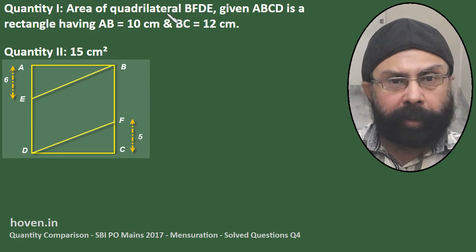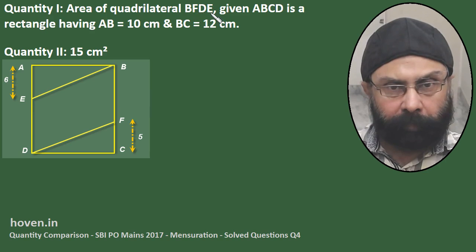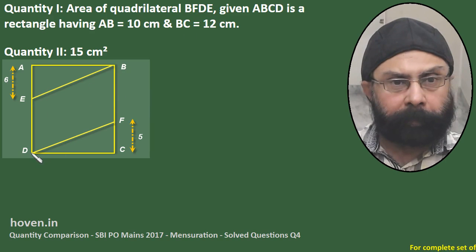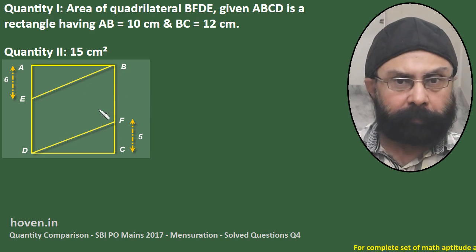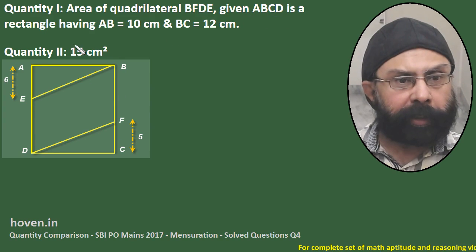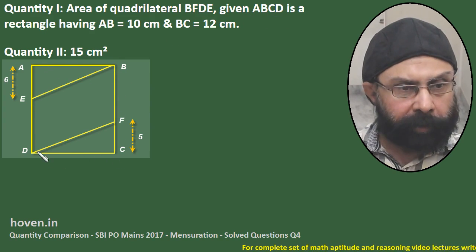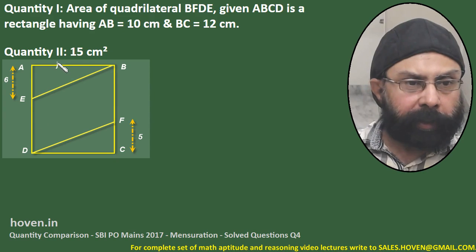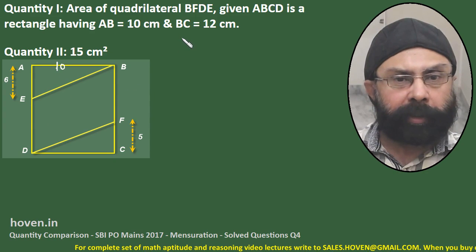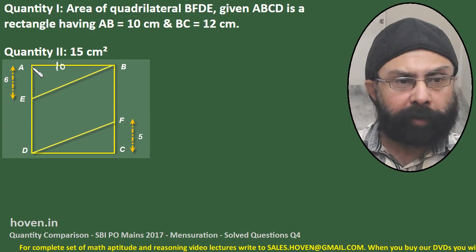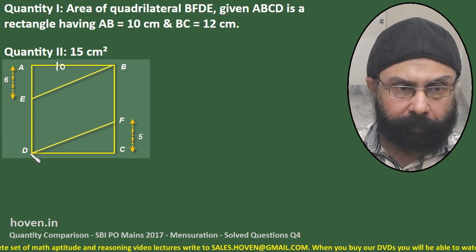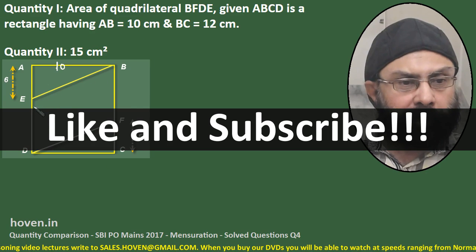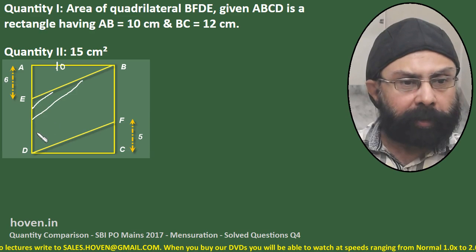Area of quadrilateral BFDE — this is a quadrilateral, a figure with four sides. Given ABCDE is a rectangle with AB equal to 10 cm and BC equal to 12 cm. Because of the rectangle, AD is also 12. We have to find out the area of this quadrilateral, the shaded portion.